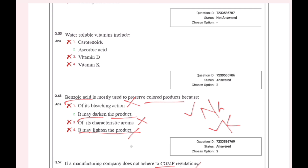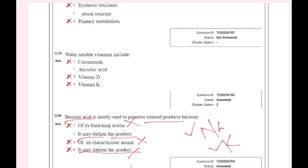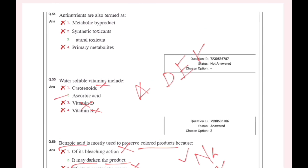Water-soluble vitamins include: ADEK... then carotenoid vitamin A, ascorbic acid, and vitamin C.